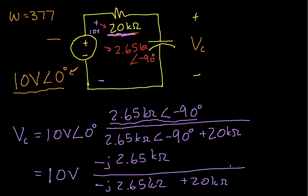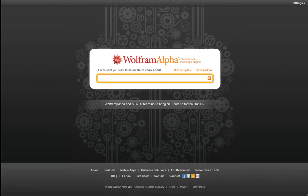So now we've got something that we can plug into Wolfram Alpha and hopefully get an expression for V sub c. So we go to Wolfram Alpha, we have 10 times minus i 2.65 k ohms. So that's going to be 2,650 minus minus i 2.65 k ohms plus 20 k ohms. And we need this to be a divide right here.